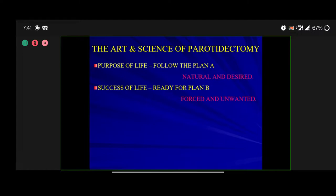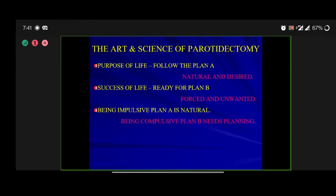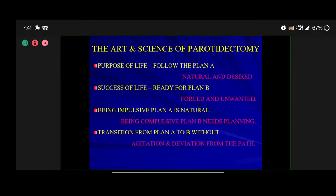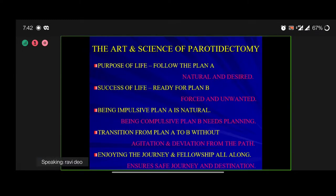The purpose of life is to have a plan and follow that plan — which is natural and desired. However, success will depend on whether you have a plan B in place. Plan B is sometimes forced and unwanted, being impulsive is plan A while plan B needs planning. When you are faced with a situation, how to handle it — how to transform from plan A to plan B without agitation and deviation from the path. Irrespective of your anatomical knowledge, surgical skills, and commitment, sometimes the on-table situation is totally different, and we need to enjoy this journey all along to ensure safe excision.